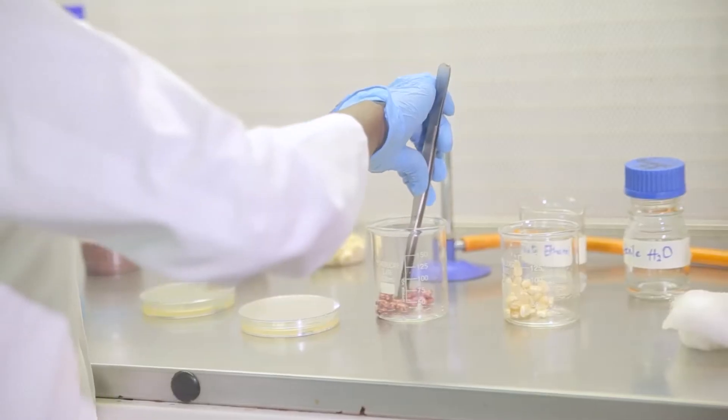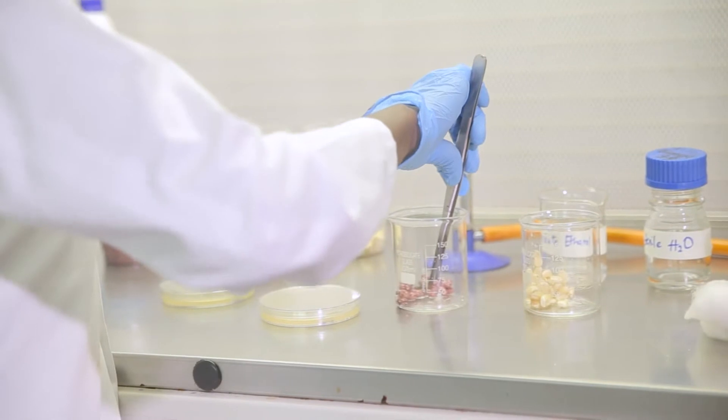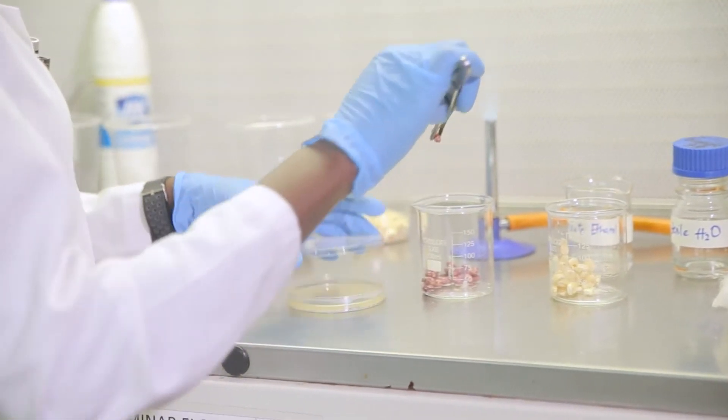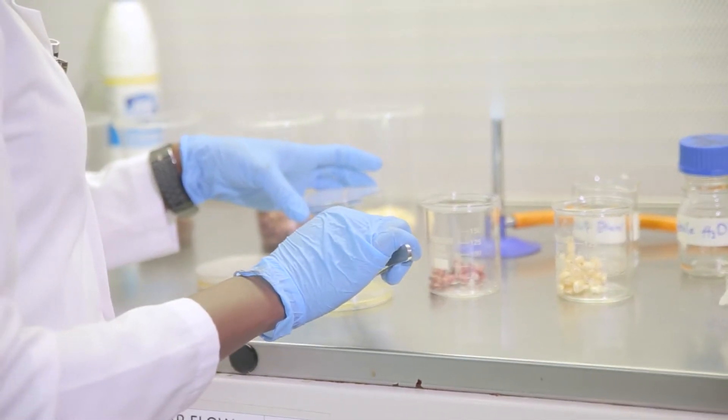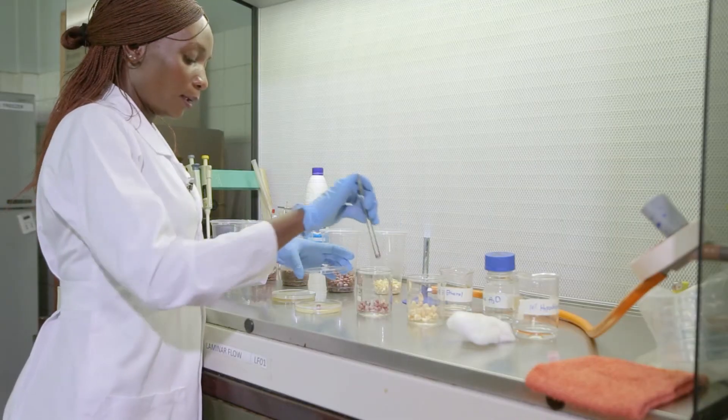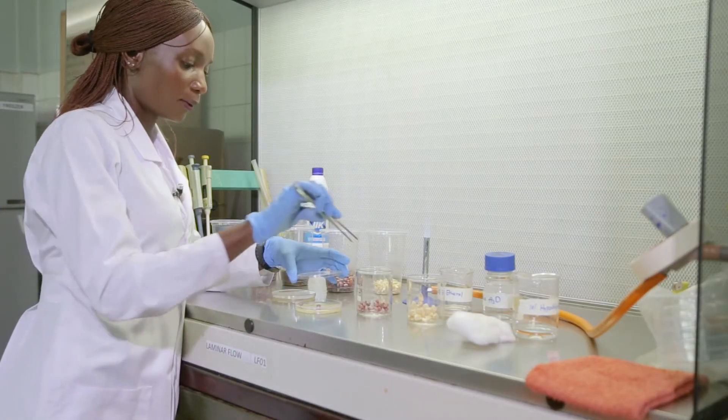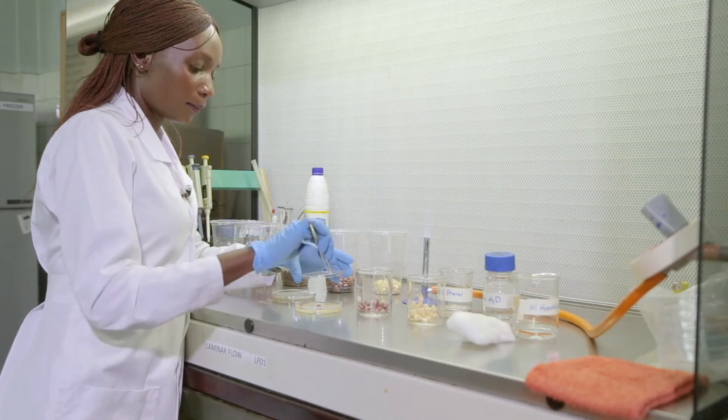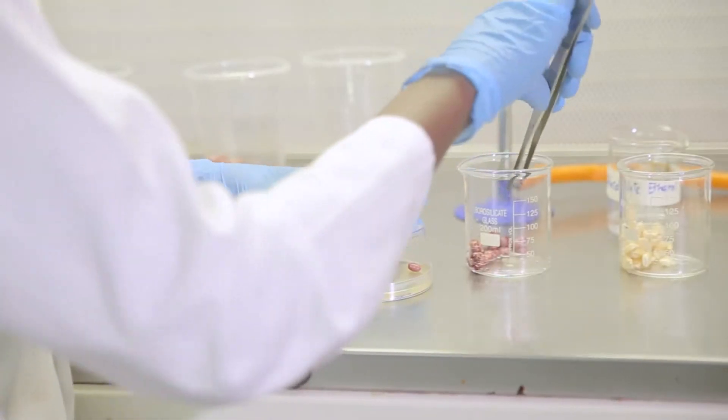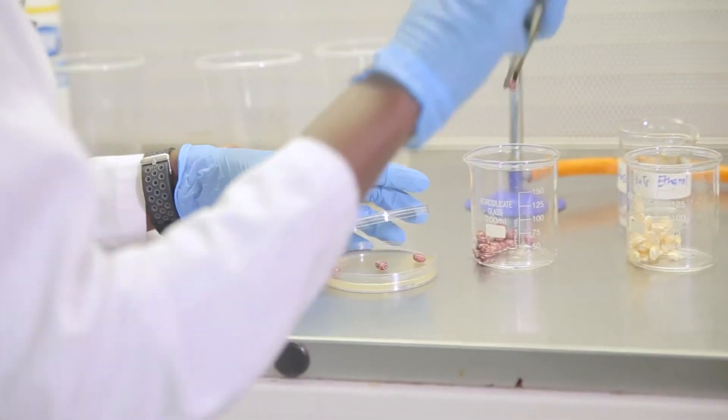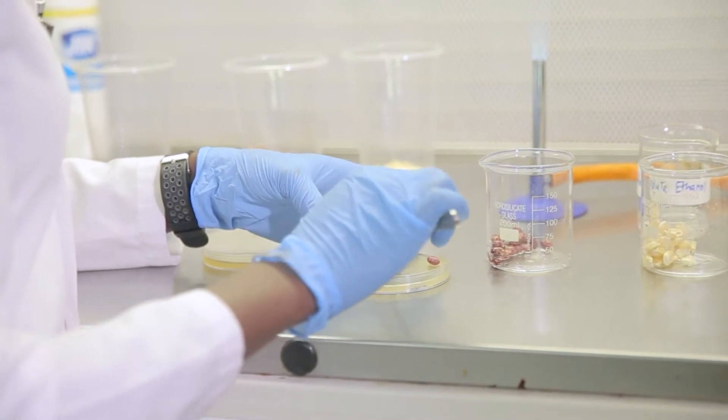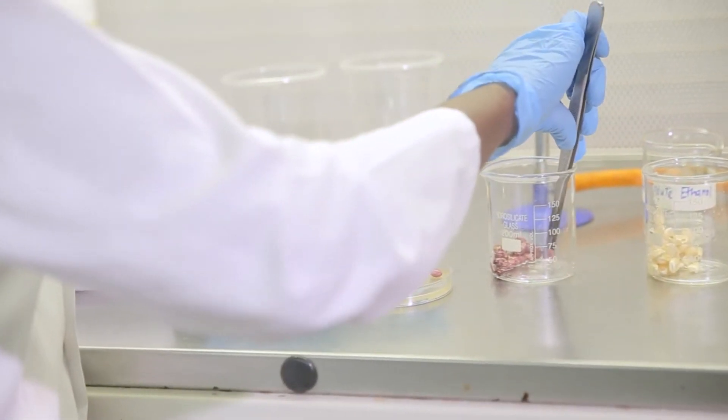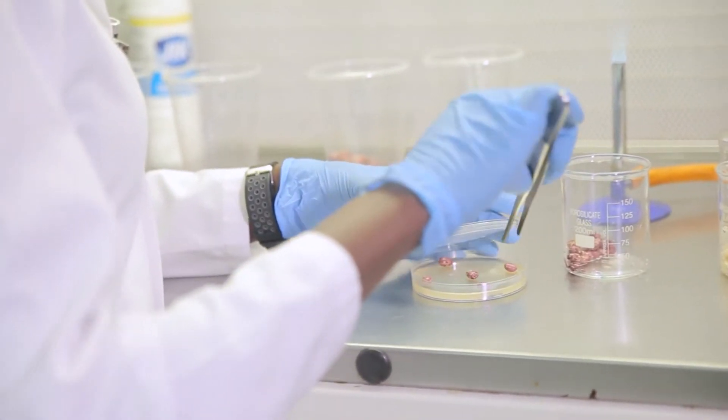So we are going to put our seeds on the surface of the agar. I'm going to put five seeds. I'll put one in the center and then I put the rest on the side. As you notice, I don't want to expose my plate too much.